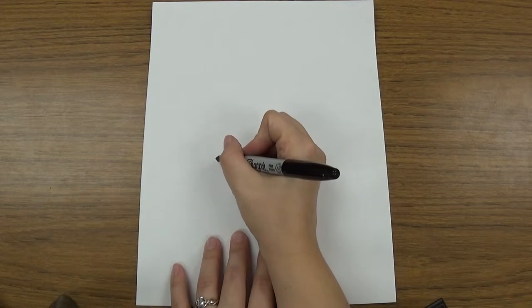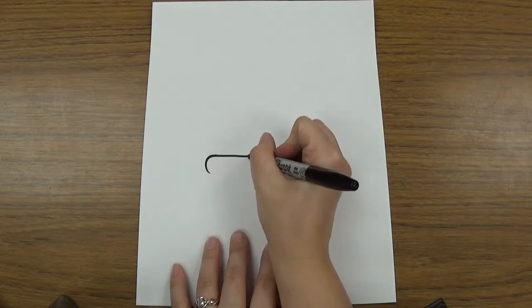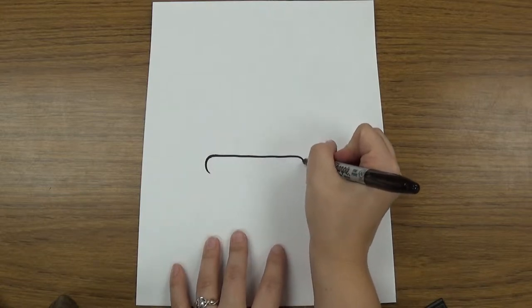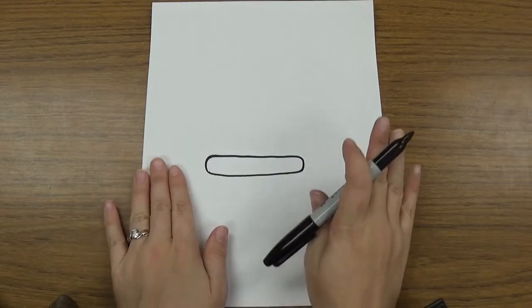And the first thing we're gonna do is we're gonna draw an oval. It's kind of a squarish oval so it's not gonna be a perfect oval, kind of like a hot dog shape.